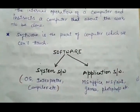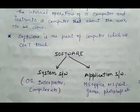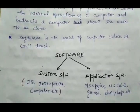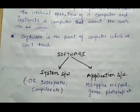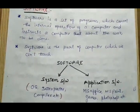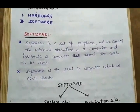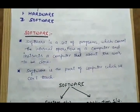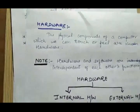The second category of software is application software. These are used to perform a specific task. For example, for drawing we can use MS Paint, for documentation MS Word, for presentations PowerPoint, for spreadsheets MS Excel, and for photo editing Photoshop. Each application software has its own particular purpose. So to summarize: software is a set of programs which controls all operations of a computer and instructs it what and how to do.